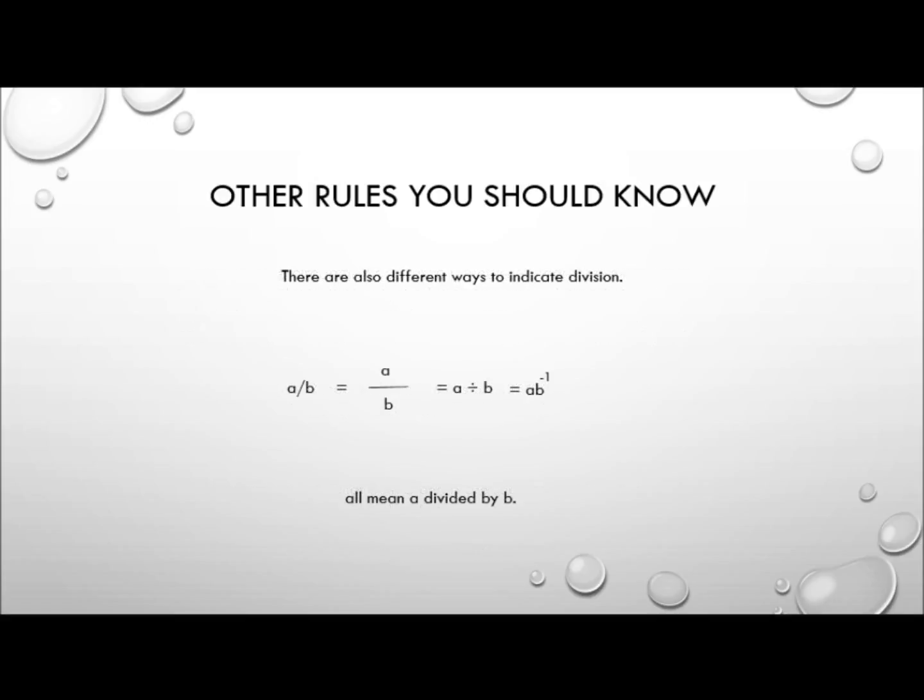There are also different ways to indicate division. a slash b is the same as a fraction with a on the numerator and b on the denominator, which is the same as a divided by b, which is also the same as a multiplied by b raised to the power of negative 1.